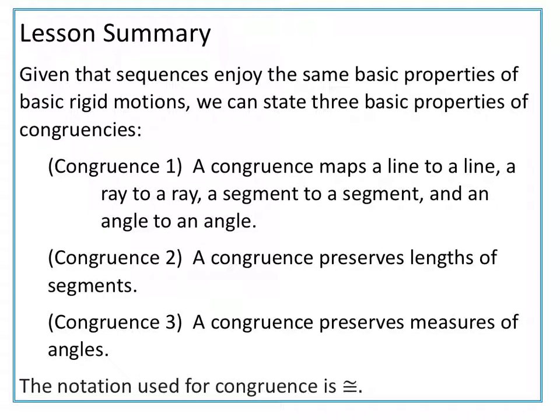Given that sequences enjoy the same basic properties of basic rigid motions, we can state three basic properties of congruencies. Congruence 1: a congruence maps a line to a line, a ray to a ray, a segment to a segment, and an angle to an angle.